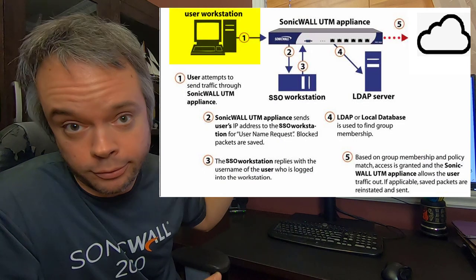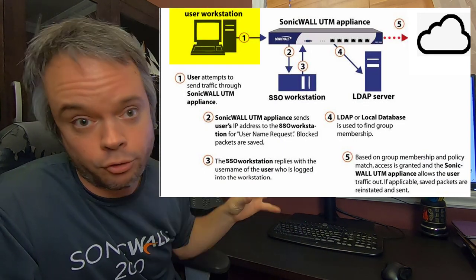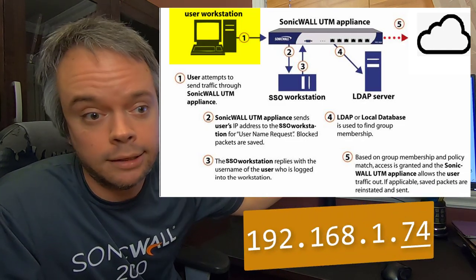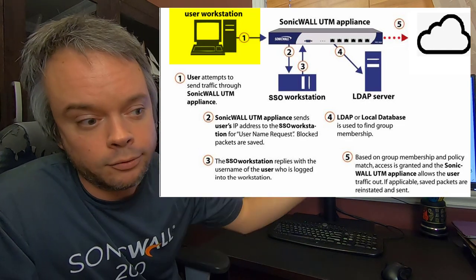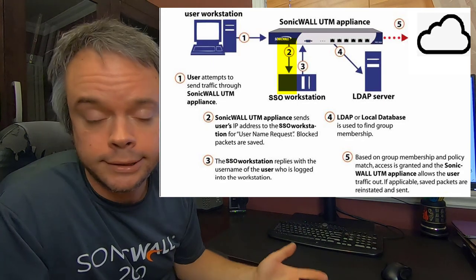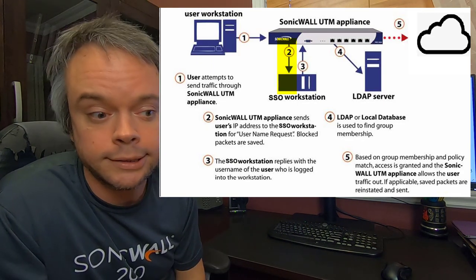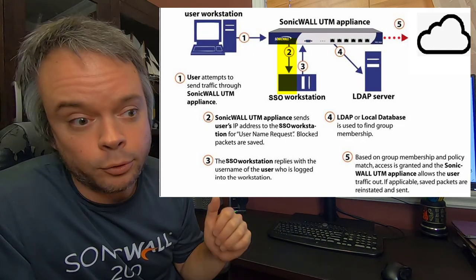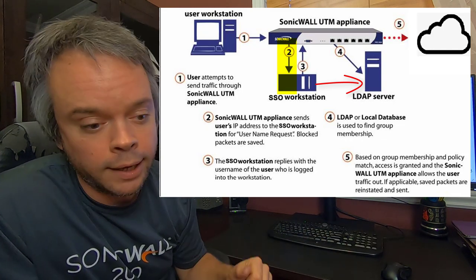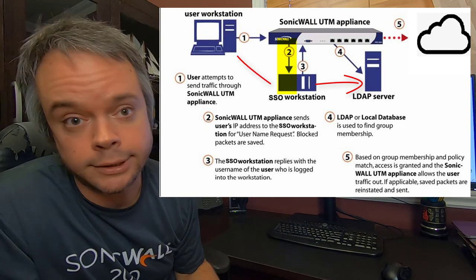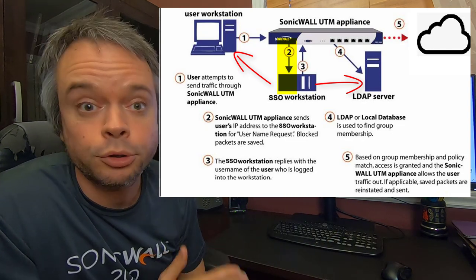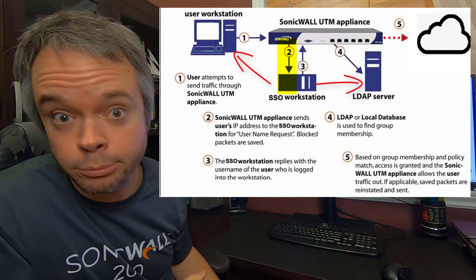When a machine tries to get to the internet, its traffic hits the firewall — the default gateway. The firewall sees a communication from, say, 192.168.1.73 wanting to reach Google or YouTube. The firewall doesn't know who the user is on that IP, so it asks the single sign-on agent. The SSO agent has two options: first, connect to the domain controller and check login/logoff events; second, connect directly to the machine itself and find out who's logged in. We'll configure both because it's nice to have both working.